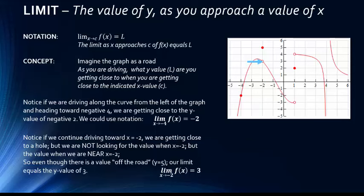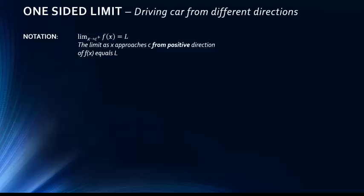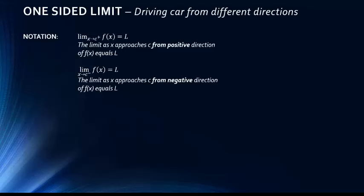This leads us to a concept called one-sided limits. The idea is what happens if you drive your car from a different direction. The notation says the limit as x approaches c from the positive direction — you'll notice a little plus sign after c. We can also approach from the negative direction, written with a minus sign. The two examples we just looked at were both from the negative direction, approaching from the left.